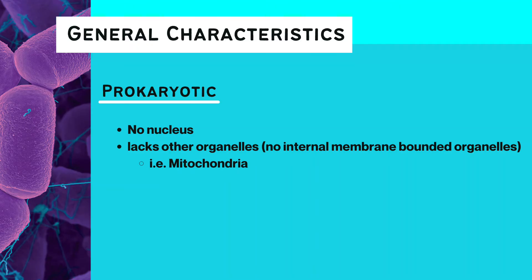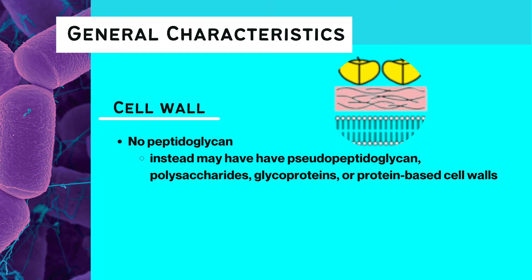these are a group of single-celled prokaryotic organisms, which means they lack a defined nucleus. They also lack other organelles like mitochondria. The cell wall of Archaea lacks peptidoglycan, but they still form rigid cell boundaries that confer resistance to high internal osmotic pressure. To do this, they may have pseudopeptidoglycan, polysaccharides, glycoprotein, or protein-based cell walls to reinforce their cytoplasmic membranes.